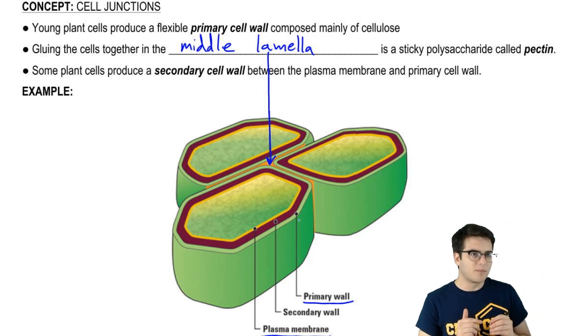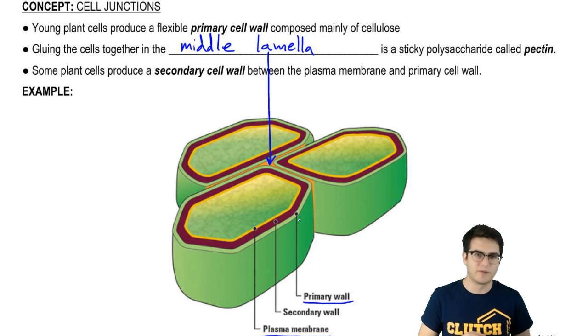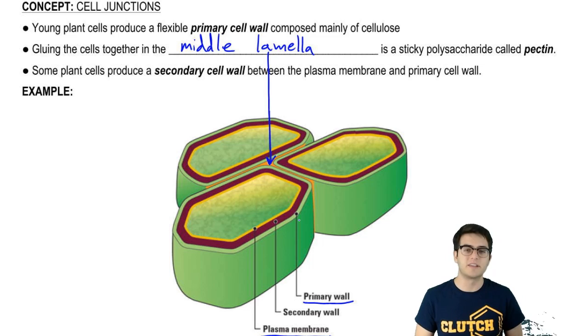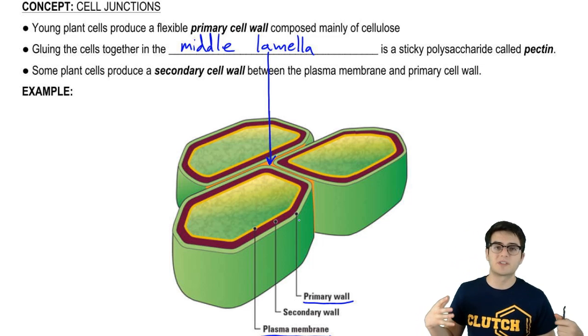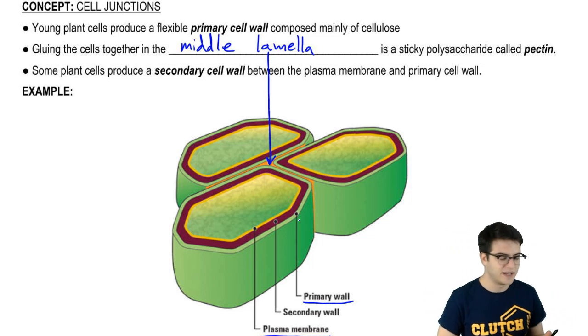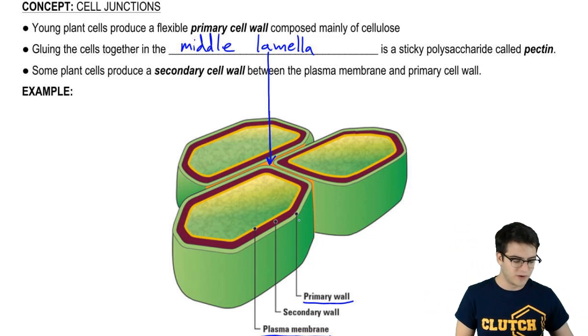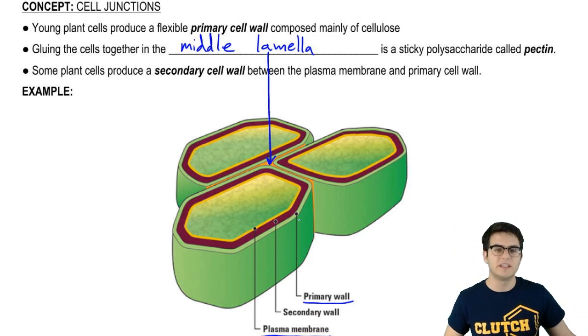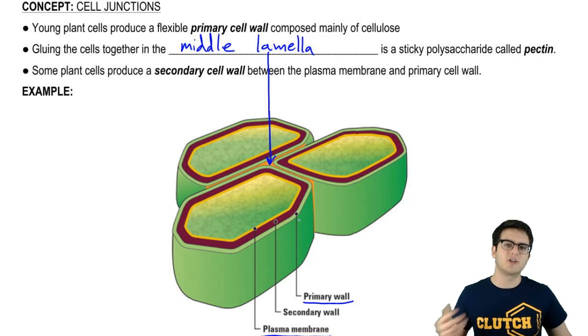So you are actually probably more familiar with plant secondary cell walls than you realize. You see, things like wood are almost entirely made up of these secondary cell walls. So the secondary cell wall is an even more rigid, even sturdier structure than the primary one.